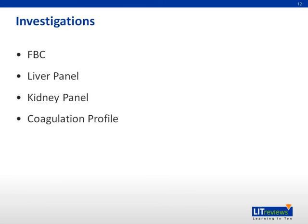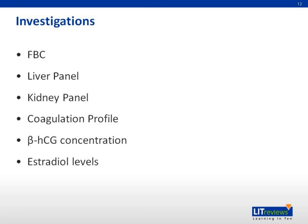Coagulation profile: OHSS is a hypercoagulable state, likely due to hemoconcentration and hypovolemia, so PT, APTT, and INR will be checked. Beta-HCG concentration: a measurement is useful at more than 12 days after an HCG injection; a positive result indicates pregnancy, and such an endogenous source of beta-HCG may lead to deterioration of OHSS. Estradiol levels are increased. Ultrasound may be needed to measure ovary size, assess follicles, and evaluate ascites. Chest radiograph may be indicated if dyspnea is present.